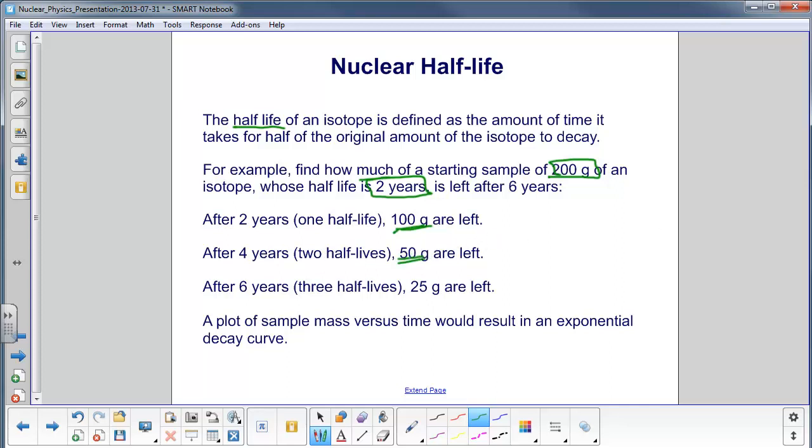Wait another two years. This is cumulative. This is two years from the beginning, four years from the beginning, six years from the beginning. So now, after six years, which is three half-lives, I take this 50 grams, cut it in half, and I'm left with 25.